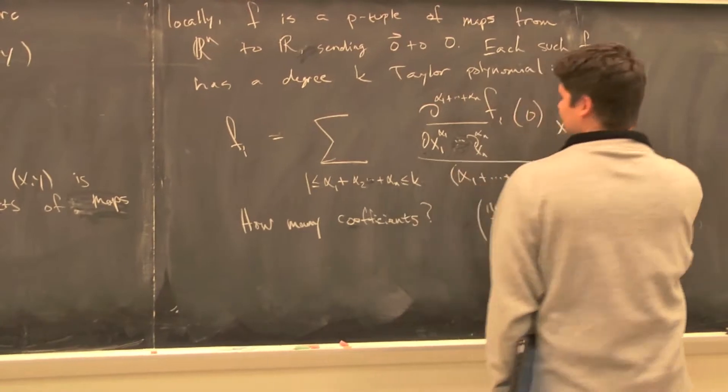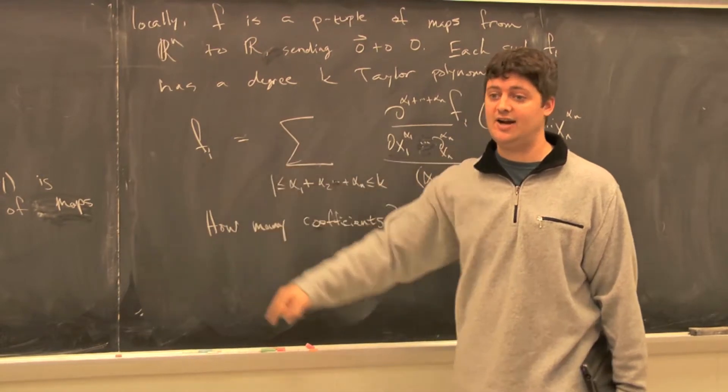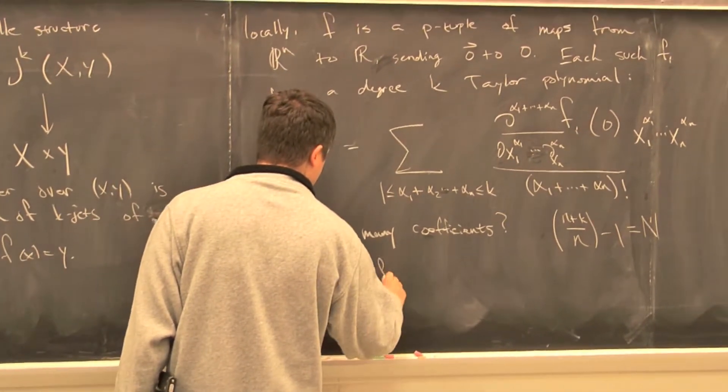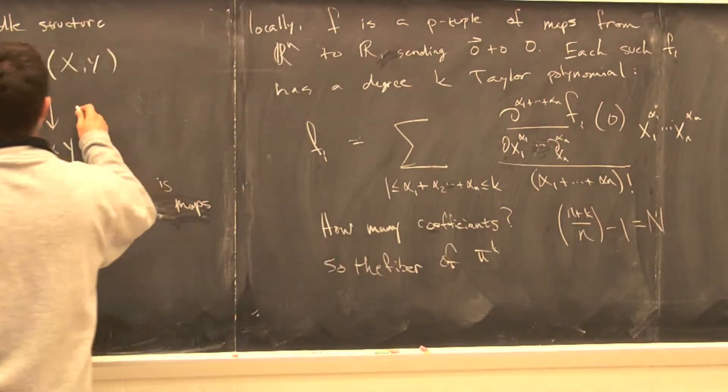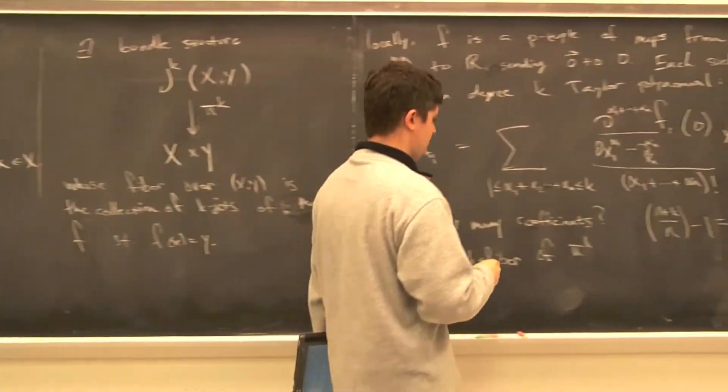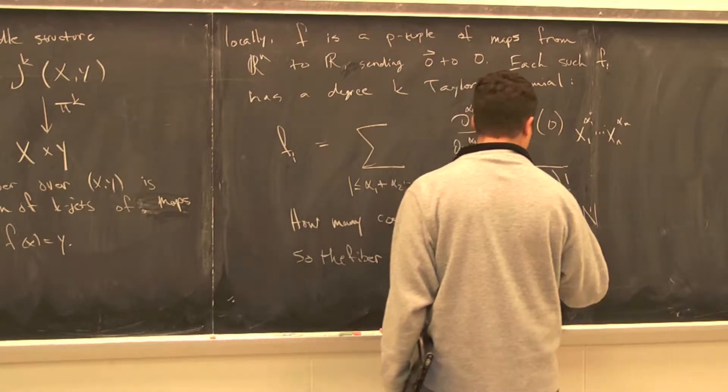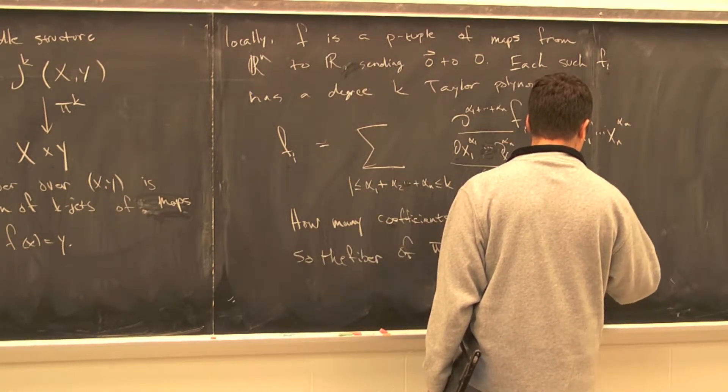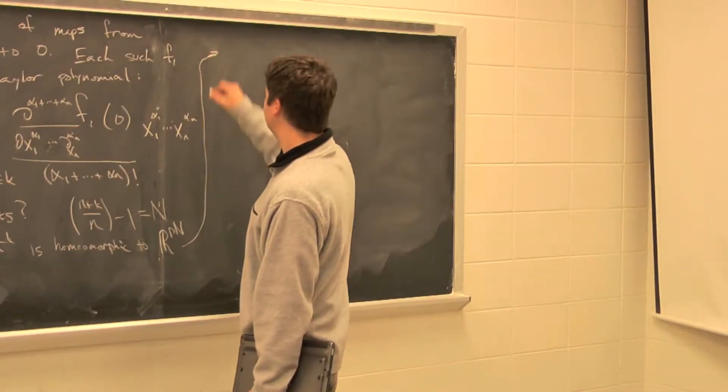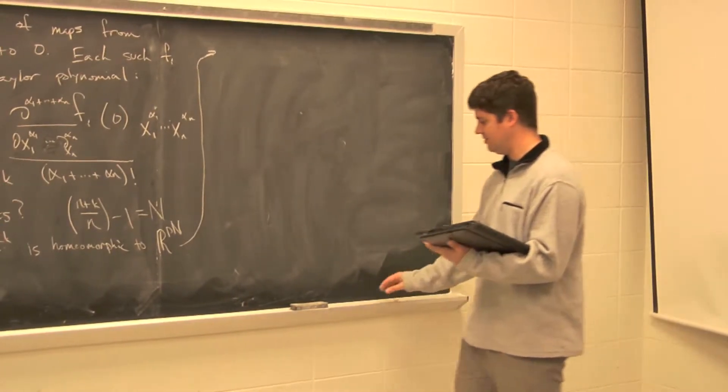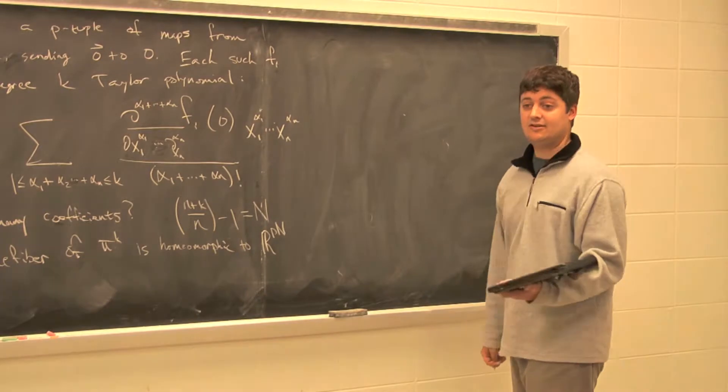So actually, the fiber of π_k is homeomorphic to R^(p·N), which is going to be very large. The next part is that π_k is not necessarily a vector bundle. Why is that?